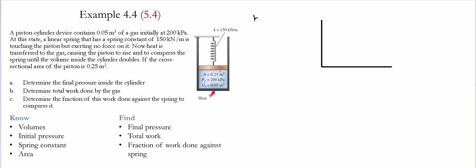For Part B, we need to calculate the total work done by the gas. For that, we create a PV diagram with pressure in kilopascals and volume in meter cubed. The initial volume is 0.05 and the final volume is 0.1 meter cubed. The initial pressure is 200 kilopascals and the final pressure is 320 kilopascals.